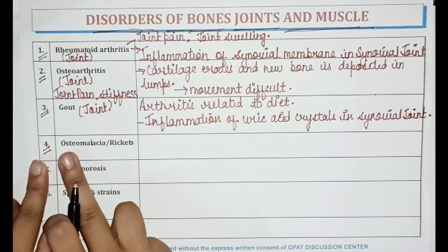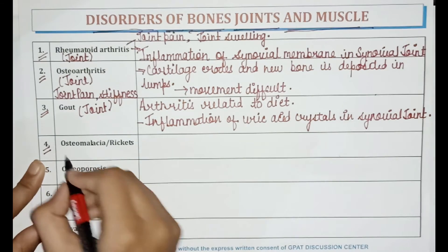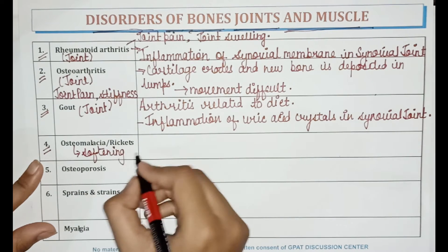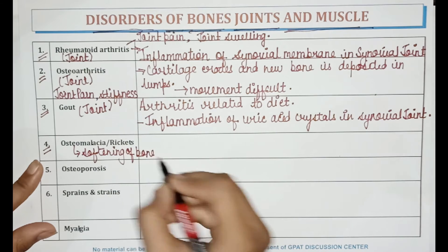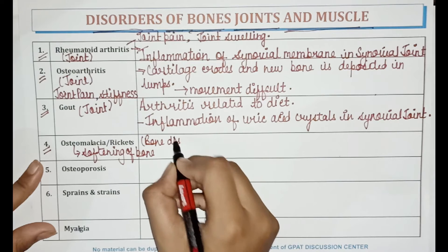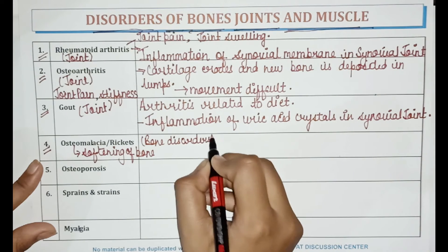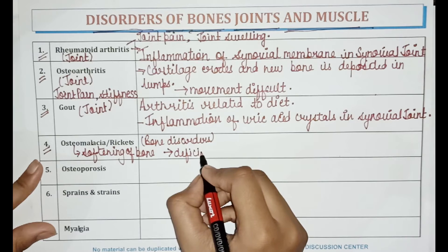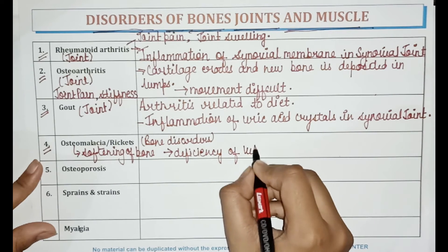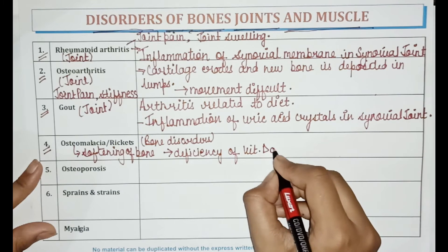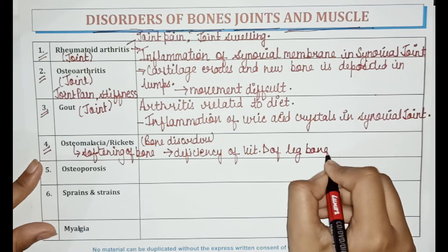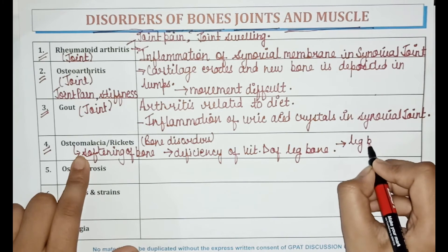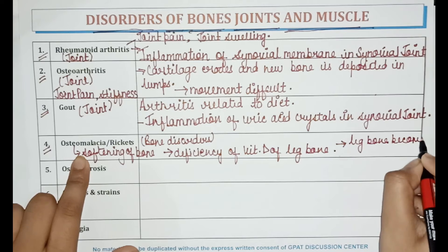The next one is osteomalacia, or rickets. This is softening of bone and it is a bone disorder. It is due to deficiency of vitamin D. Due to deficiency of vitamin D, the leg bones become bow-shaped.